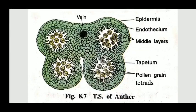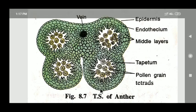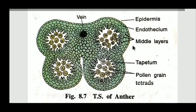As I told you earlier, mature anther having four walls or four layers. That is epidermis, endothesium, middle layer and tapetum. I will explain one by one the function and structure of each layer. The first layer is epidermis. Flatten cells are arranged compactly with each other, forming the outermost layer, called as epidermis. This epidermis is mostly protective in function. Always remember, the main function of the outermost layer is protection.